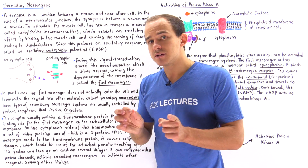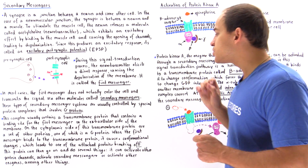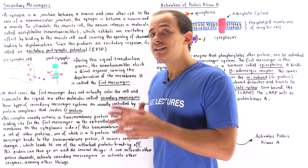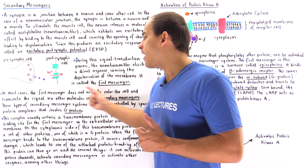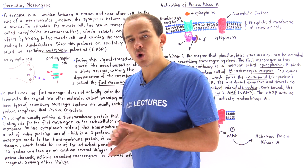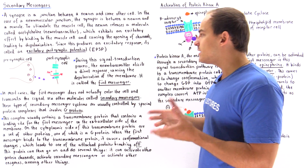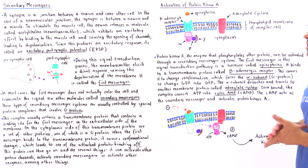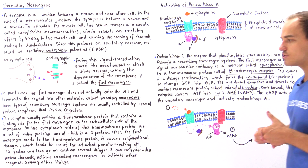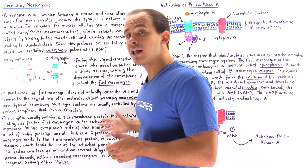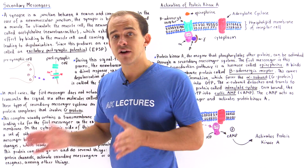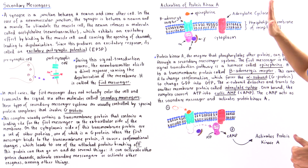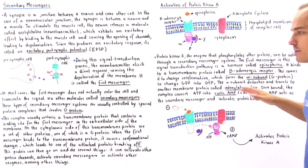Secondary messenger systems are most often controlled by special protein complexes that involve G-proteins. Let's take a look at a specific example of such a secondary messenger system.